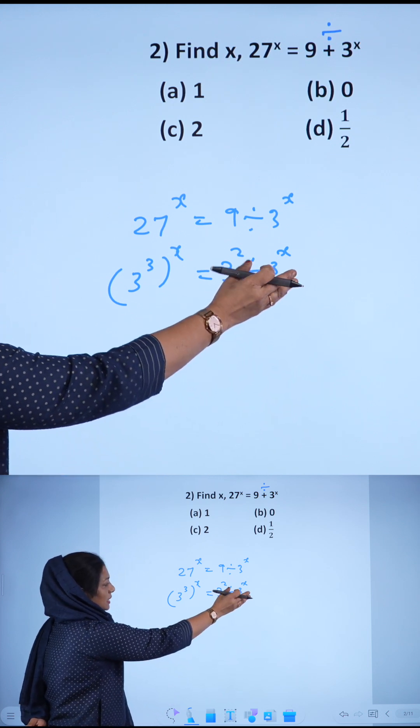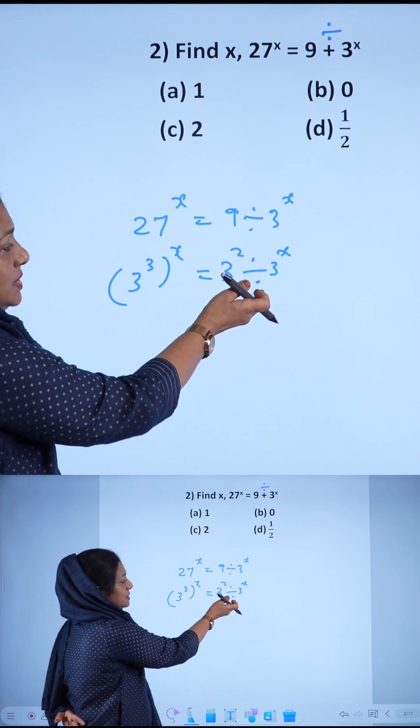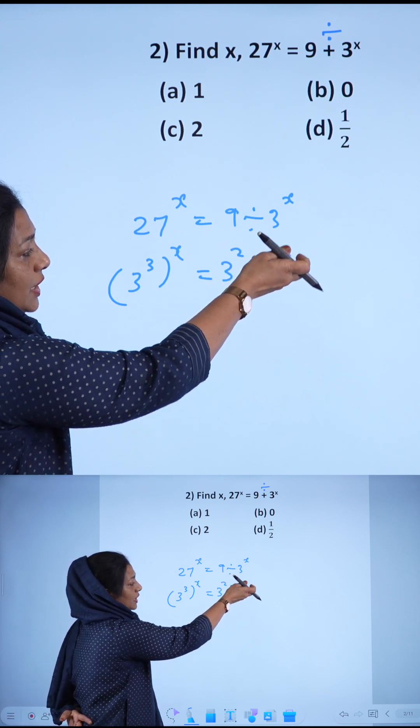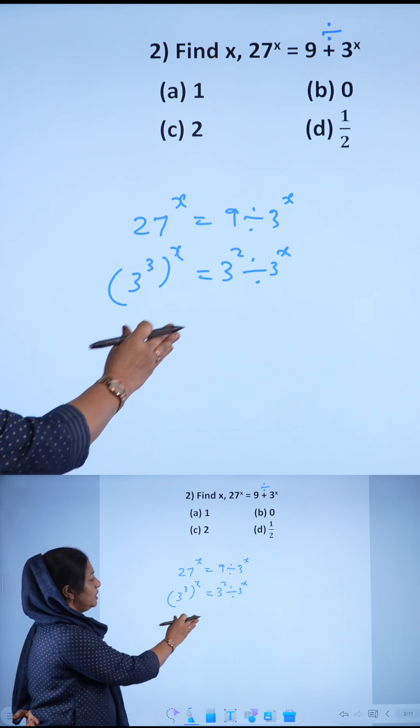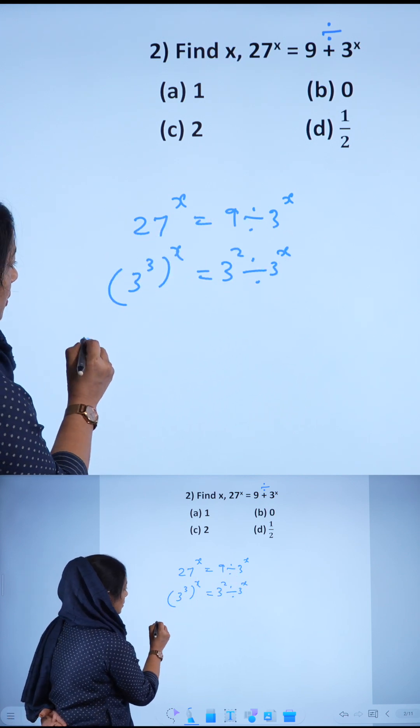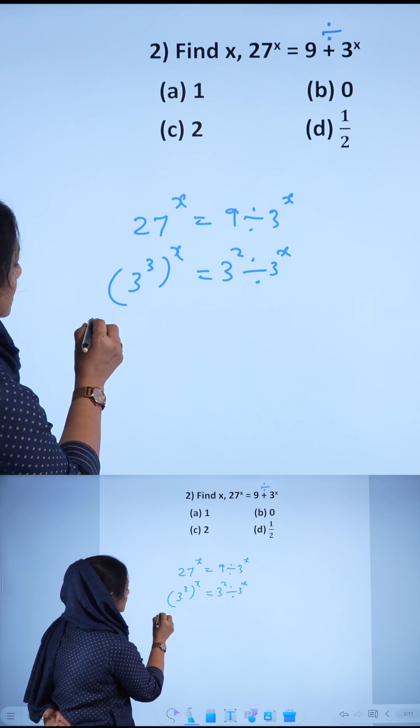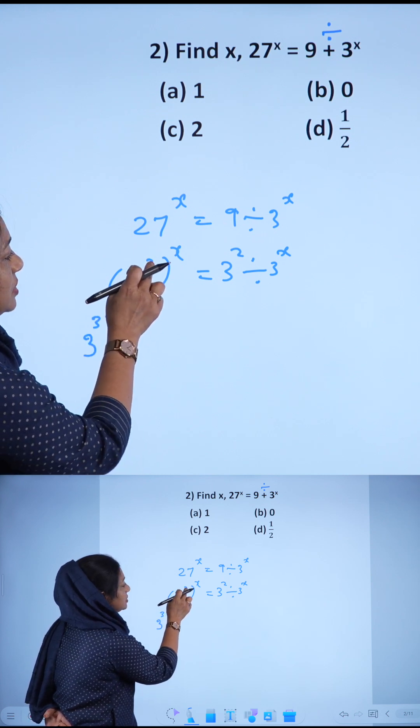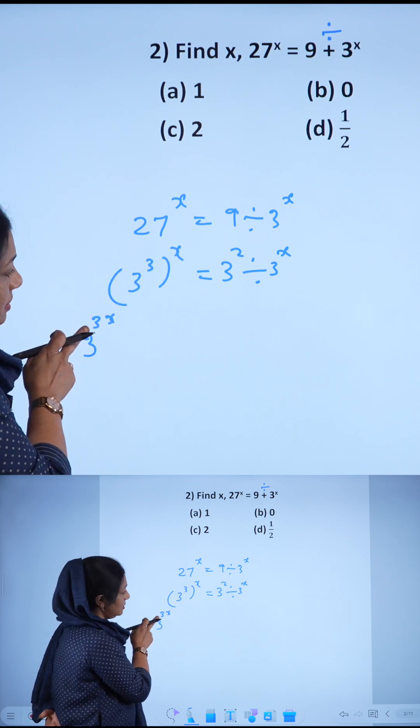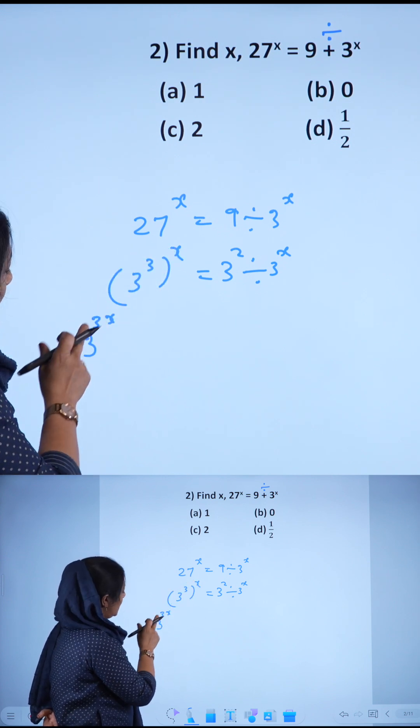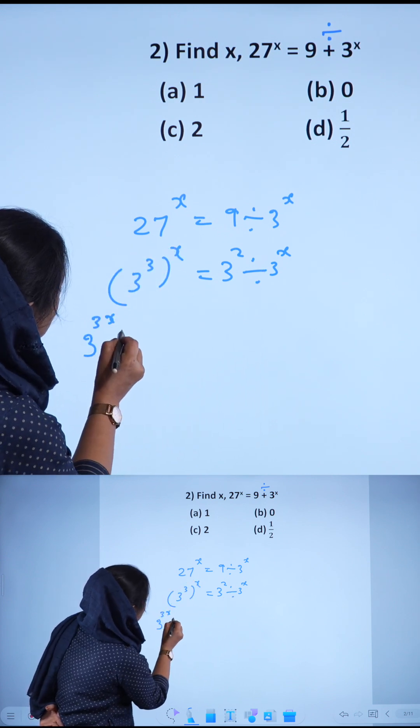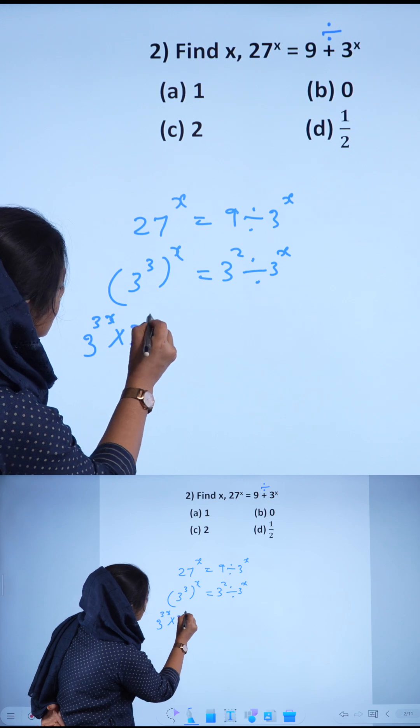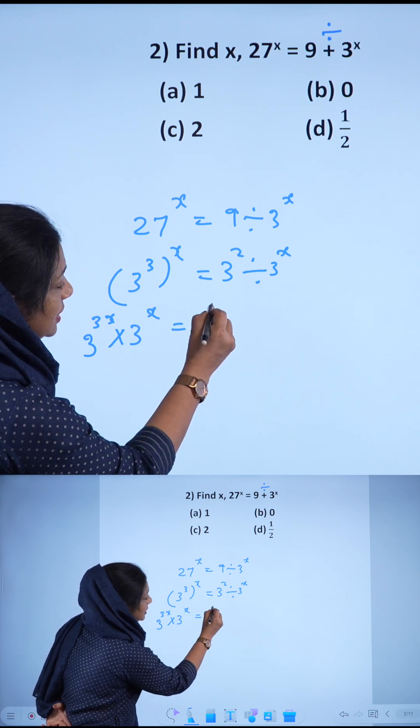From the RHS, division by 3 raised to x comes to the LHS as multiplication. So 3 raised to 3x—using the rule x raised to m times n equals x raised to mn—means 3 raised to 3x times 3 raised to x equals 3 squared.